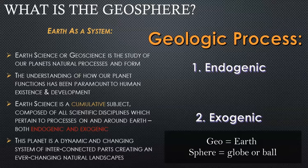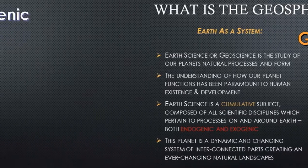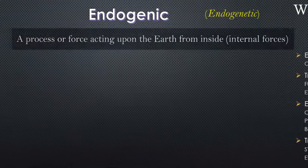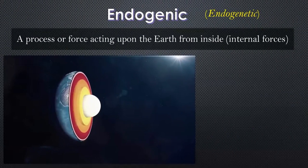We can break down the processes that make up the geosphere — 'geo' is Greek for earth and 'sphere' is a Latin-Greek derivative meaning realm, region, or zone. So looking at the physical rock zone, we can break this down into two sections: the endogenic and the exogenic.